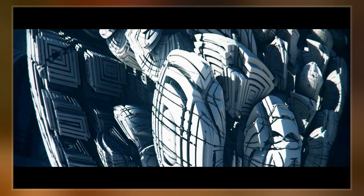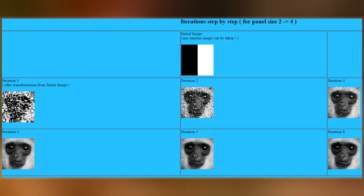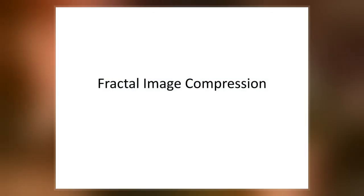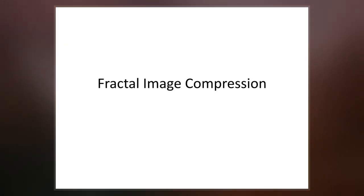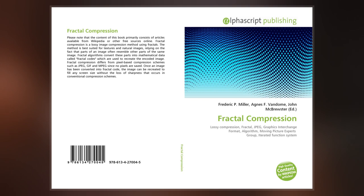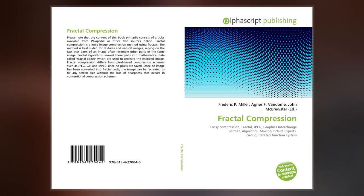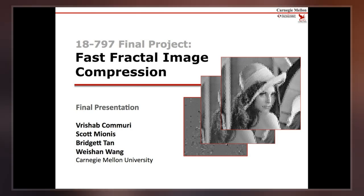Fractal image representation may be described mathematically as an iterated function system. We begin with the representation of a binary image, where the image may be thought of as a subset of R². An IFS is a set of contraction mappings 1 through N.